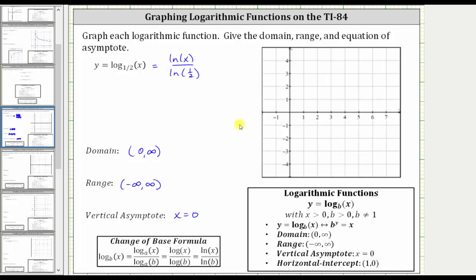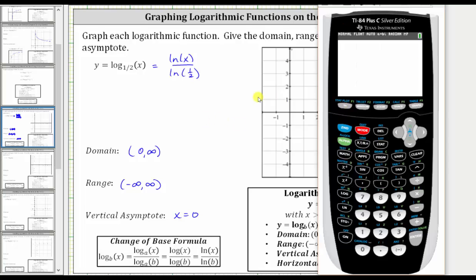And now going to the graphing calculator, the first step is to enter the function using the change of base formula. So we press y equals, we enter natural log x close parenthesis, divided by natural log either 0.5 or 1/2, and then close parenthesis. To make sure we have the standard window, let's press zoom six, and now we have a nice graph of the function.